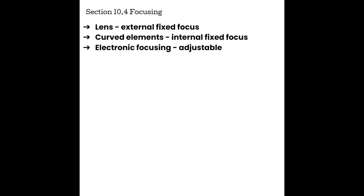Section 10.4: Focusing. The natural focus of an unfocused beam is really inadequate for clinical use — we can't adjust it and it doesn't get very narrow. Therefore, three types of focusing have been utilized in transducer construction: lenses provide an external fixed focus; curved elements provide an internal fixed focus; and electronic focusing is our modern, adjustable tool and a cornerstone of ultrasound imaging. Let's take a look at all three in a bit more detail.